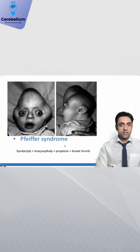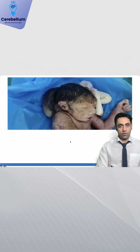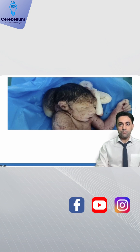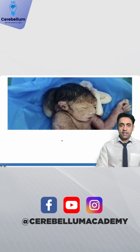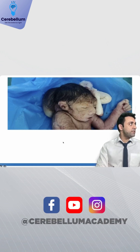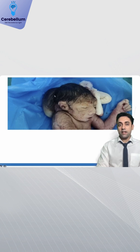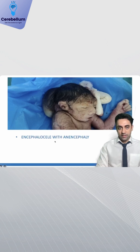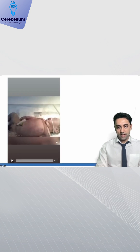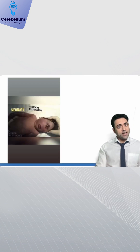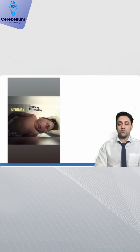Next important picture: this is also again the clover leaf shaped skull seen in Pfeiffer syndrome, very important. This is the neural tube defect you can see in this baby — it is anencephaly with NTD. That finishes 90 seconds, thank you so much everyone.